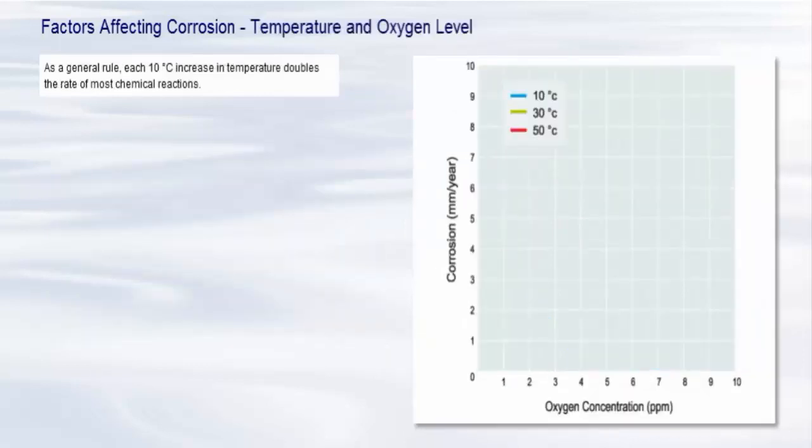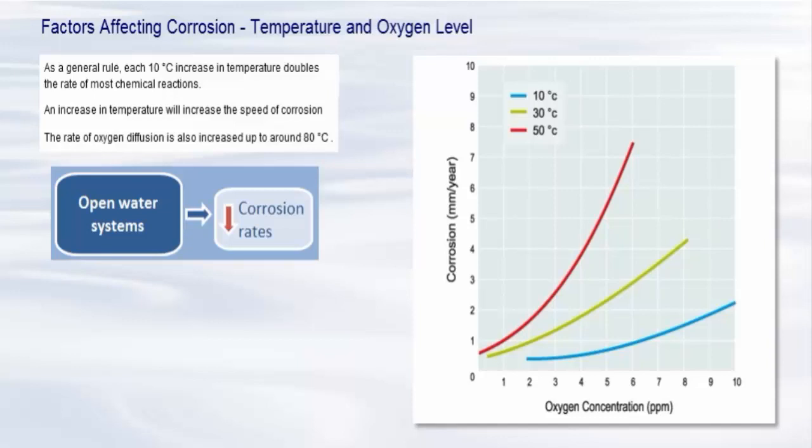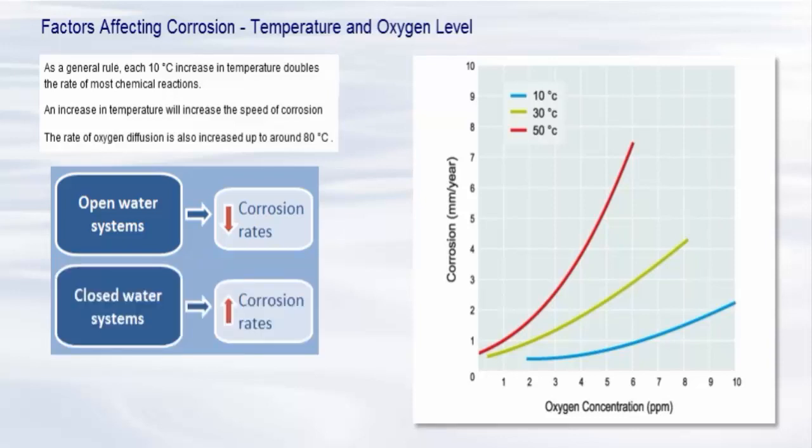As a general rule, each 10 degrees Celsius increase in temperature doubles the rate of most chemical reactions. Therefore, an increase in temperature will increase the speed of corrosion because the reactions at the cathode will proceed faster. The rate of oxygen diffusion is also increased up to around 80 degrees Celsius. In an open system, the increase in corrosion rate begins to reduce because of the reduced solubility of oxygen. However, in a closed system such as an engine cooling circuit, the oxygen cannot escape, and increased corrosion rates will continue to be observed as the temperature rises.